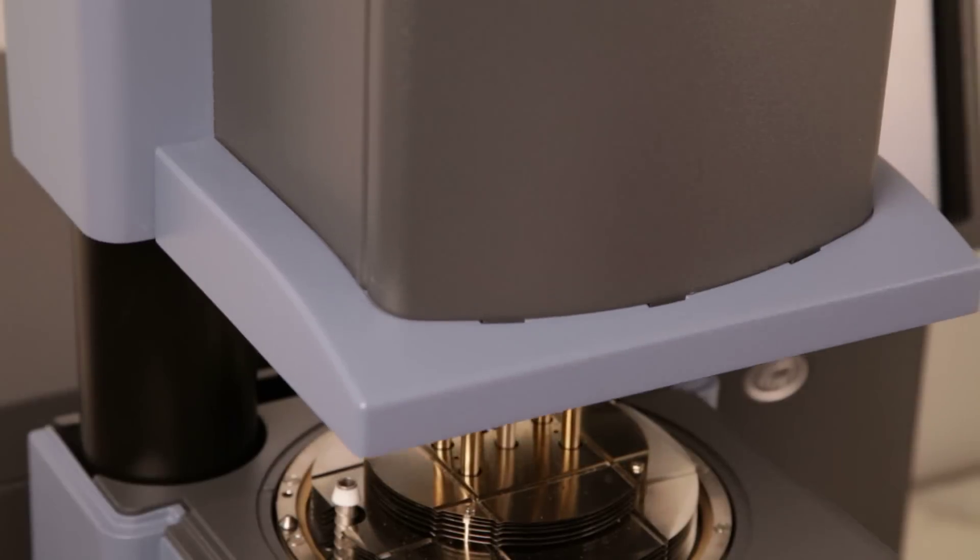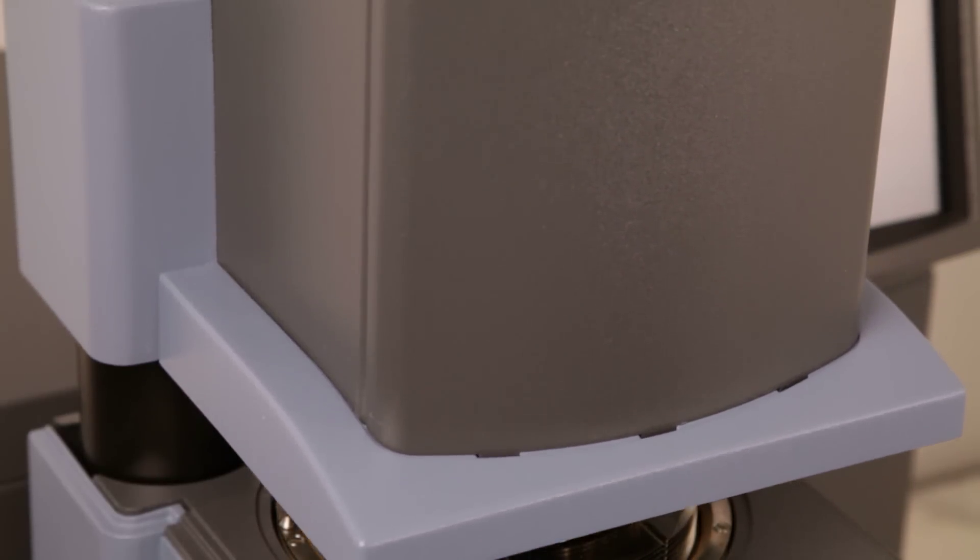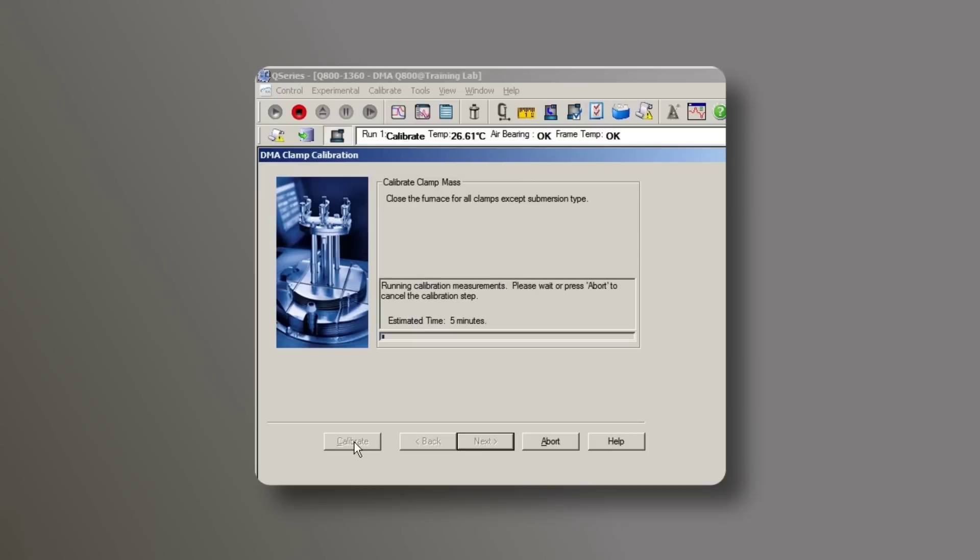Next, close the furnace from the instrument touch screen, then click on calibrate. This first calibration step is to calibrate the mass of the movable clamp.